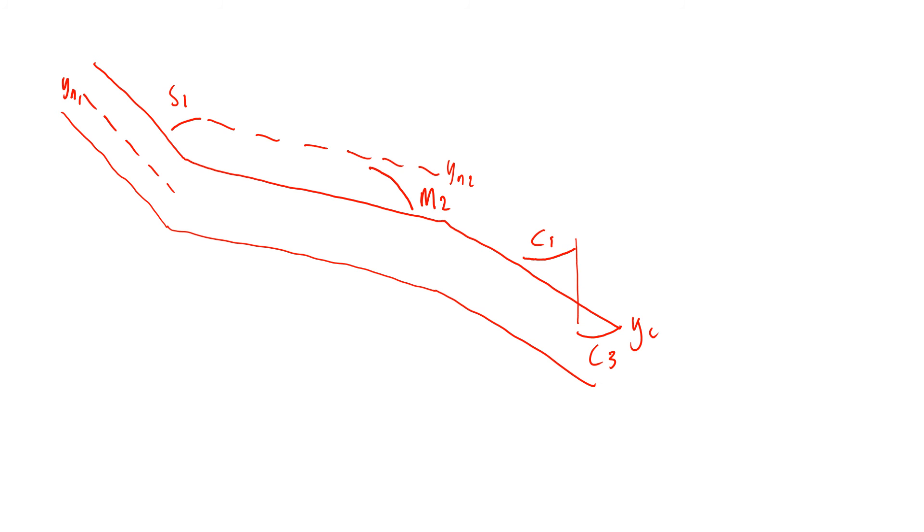And then finally here, because it goes steep to mild, depending on where the flow is at, you can also get an M3, because that is also increasing to meet YN2. So you can either get S1, M3, M2, C1, or C3. So those are the possible profiles that can occur.